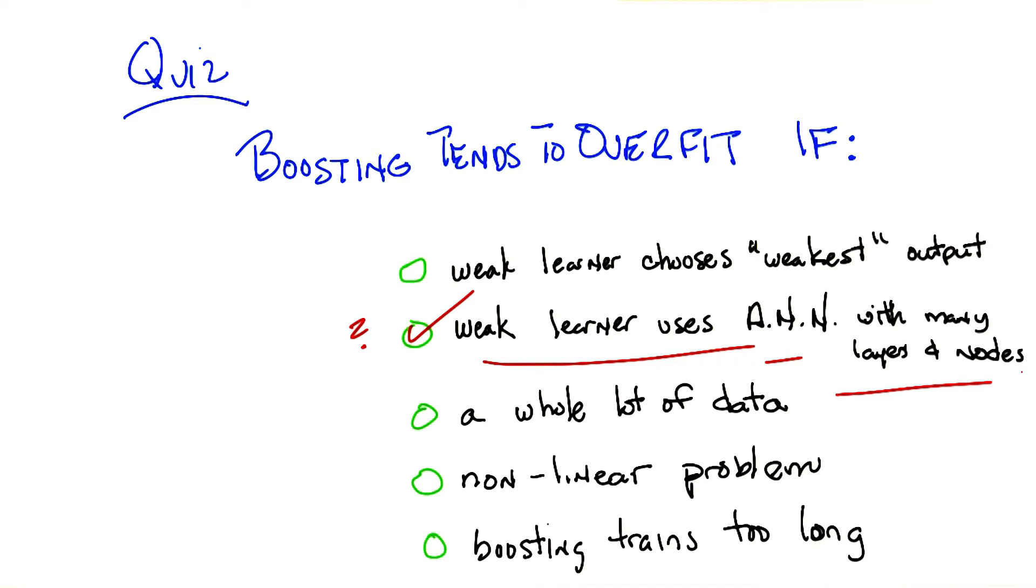Now I do want to have a little semantic argument with you for a moment, Michael. You used the word strongest at some point when you were talking about choosing the weakest output. And I just want to point out that that doesn't really mean anything. What do you mean it doesn't mean anything?